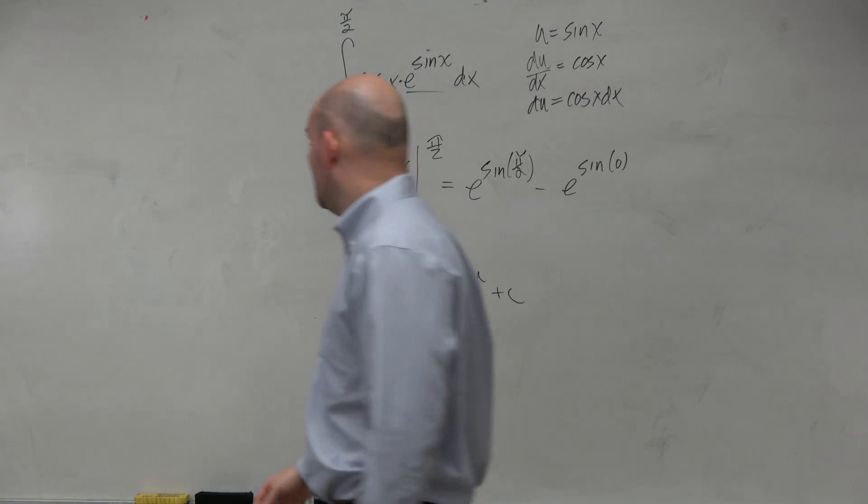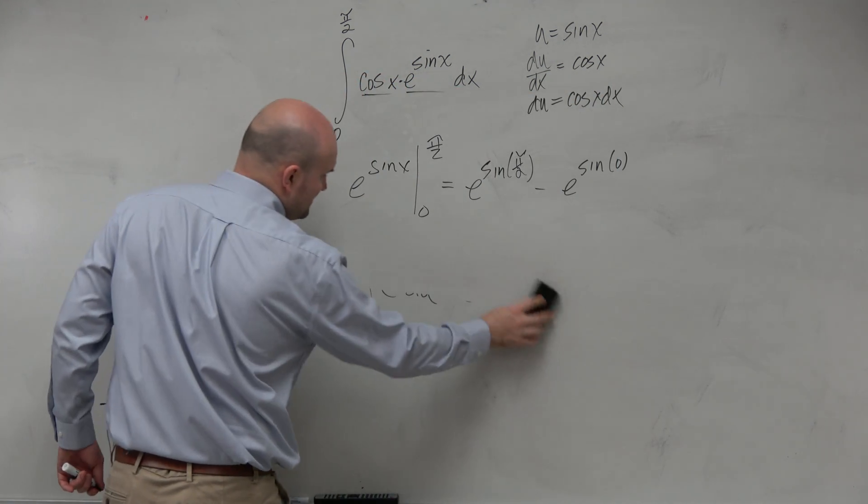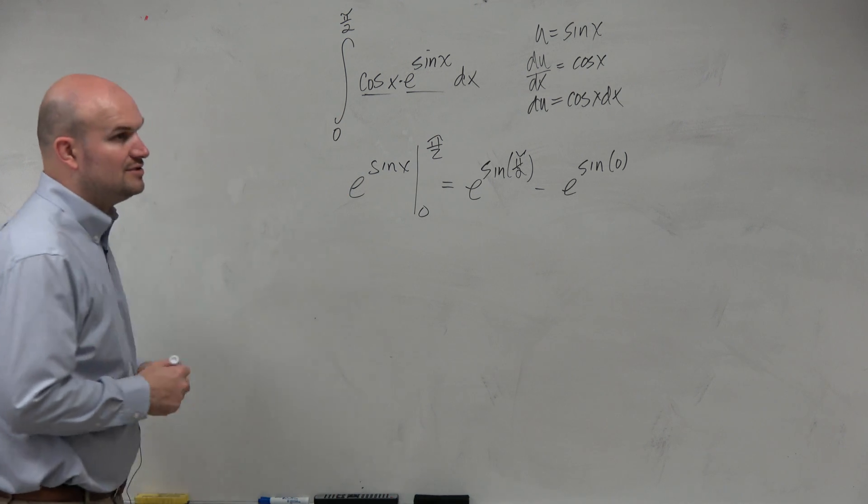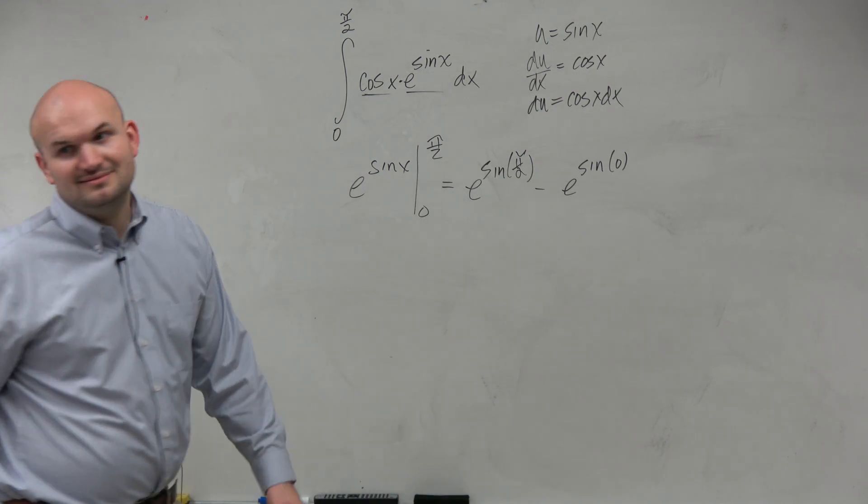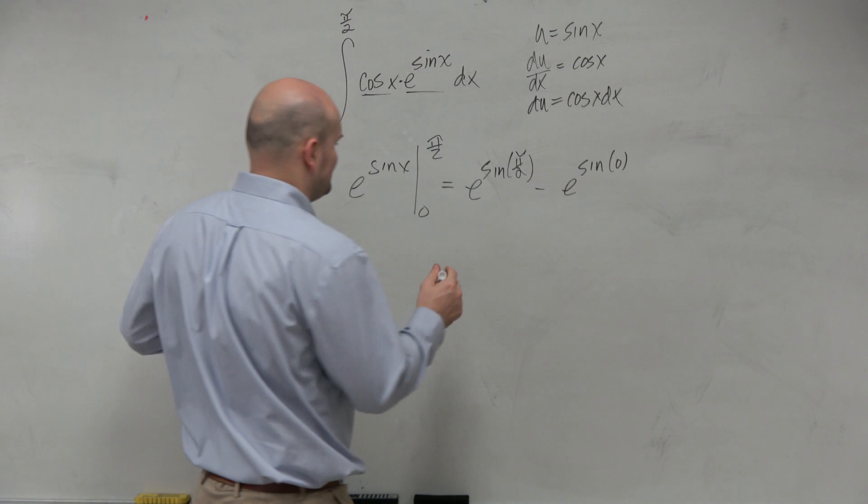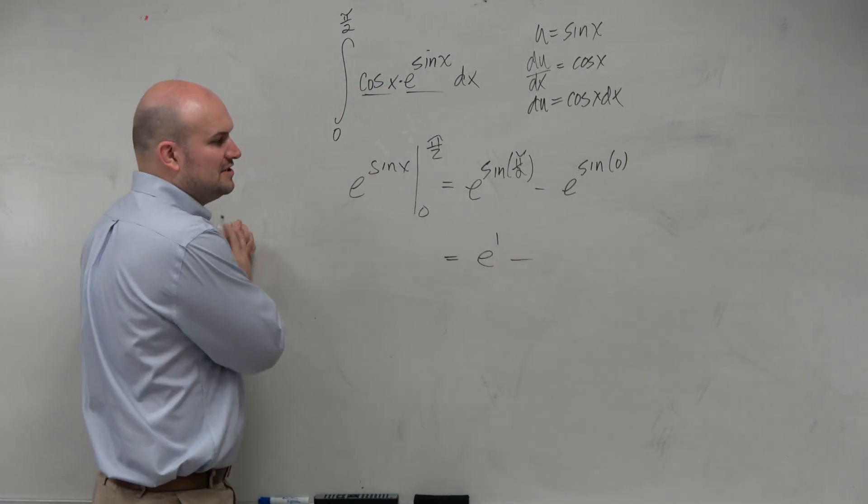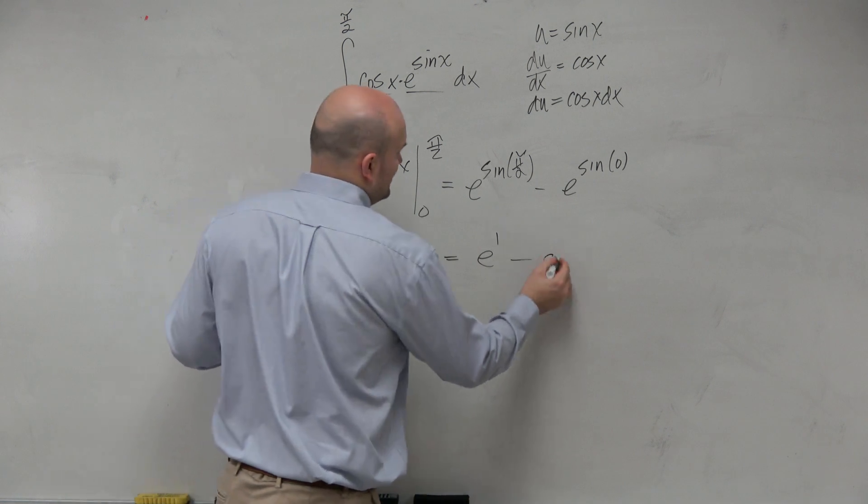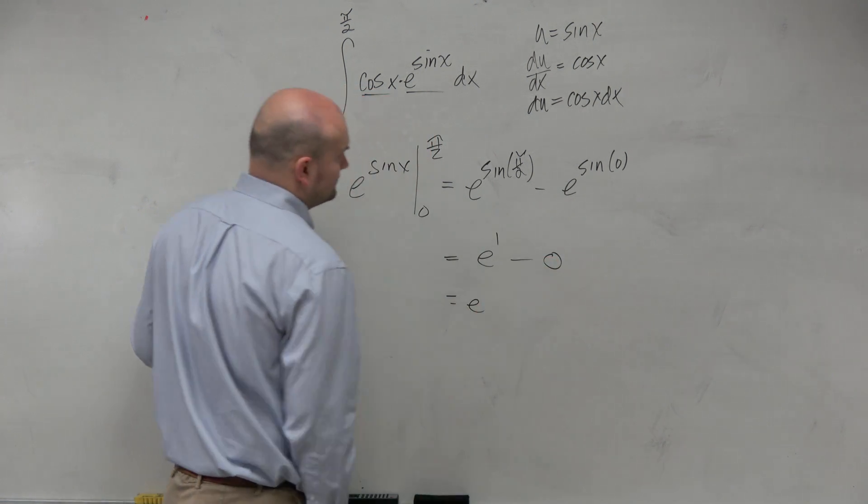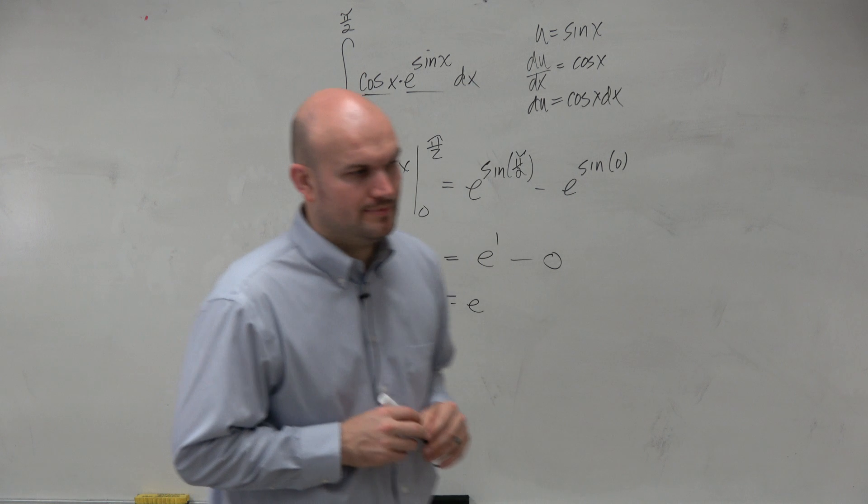Right? So let's go and look. Pi halves, we know that sine is going to be equal to 1. e to the 1 minus the sine of 0 is 0. There you go.